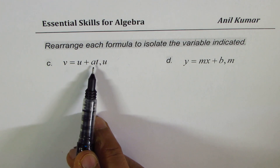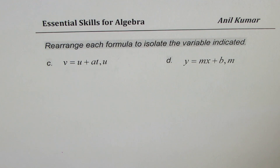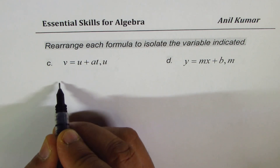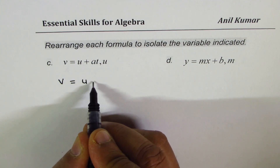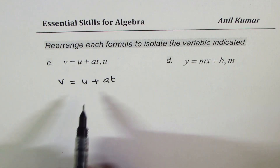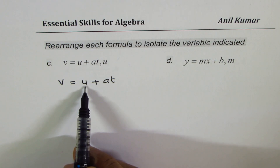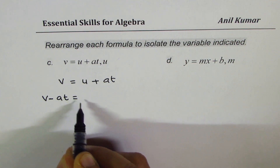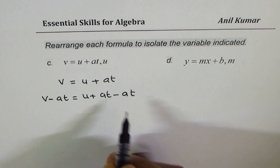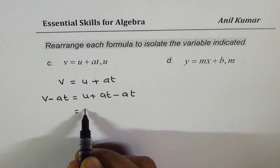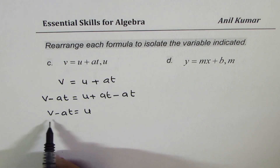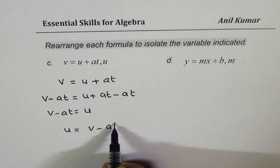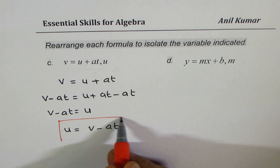v = u + at; you need to isolate u. We use this formula to find velocity — final velocity equals initial velocity plus acceleration times time. Since we want u and we do not want at, we'll take away at from both sides. So we can write v − at = u + at − at. Since at − at is 0, you are left with u on the right side and v − at on the left. So u equals v minus at.